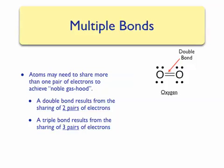A triple bond can result from the sharing of three pairs of electrons. The diatomic molecule that exists as an element with a triple bond is nitrogen. Three pairs of electrons are shared between the two nitrogen atoms — if you count the number of electrons around each nitrogen, you will find that each nitrogen has an octet, or is isoelectronic with a noble gas.